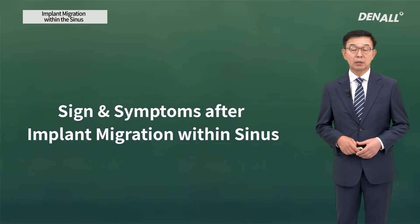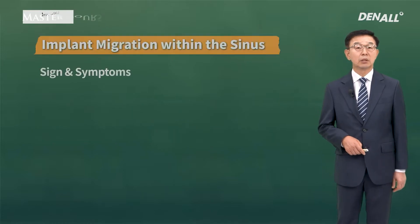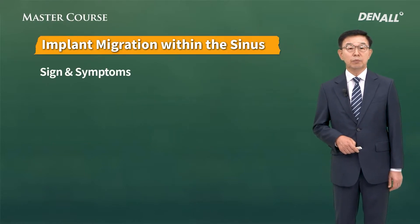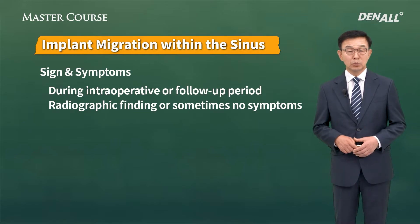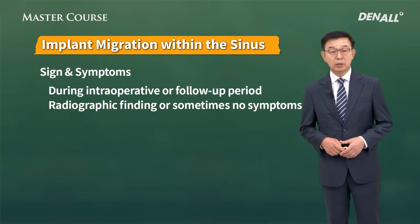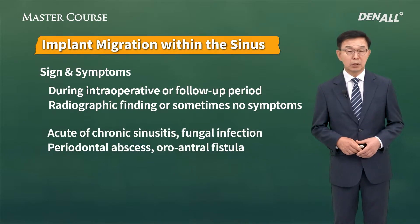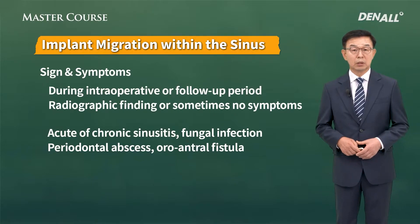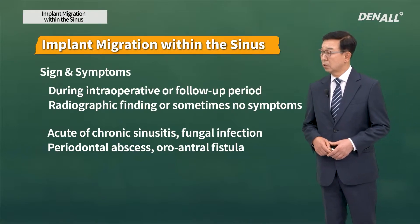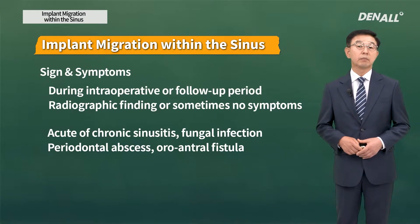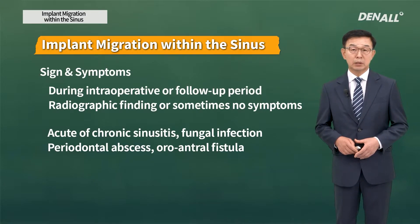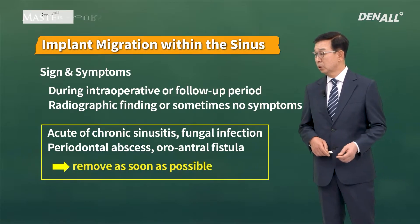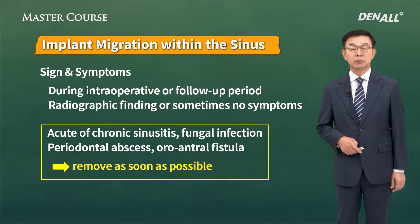Let's look at the symptoms when the implant falls into the sinus. At times there may not be special symptoms. However, in most cases when the implant migrates into the sinus, it can lead to acute or chronic sinusitis, and rarely it can lead to fungal infection. An oral-antral fistula can also be formed. Therefore, when you do crestal approach or window approach, you need to do regular checkup, and if the implant has migrated into the sinus, you need to remove it as soon as possible.